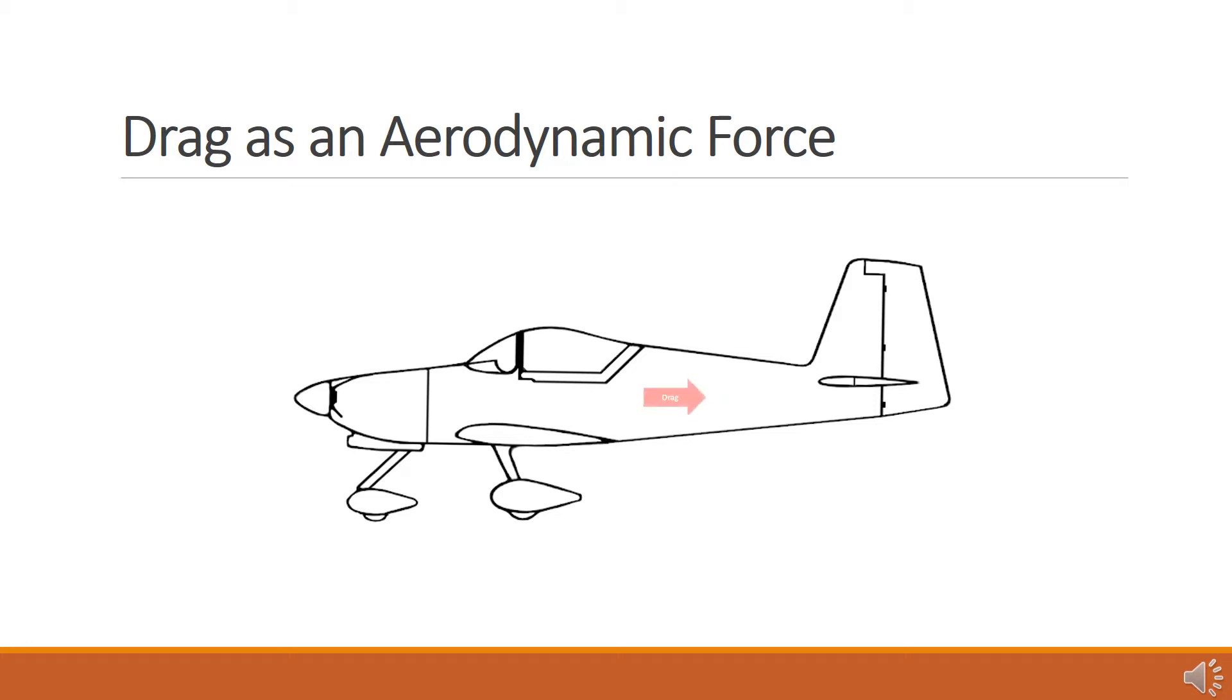Drag is the aerodynamic force that opposes an aircraft's motion through the air. Drag behaves and impacts an aircraft as a mechanical force causing the aircraft to slow down. As a force, it can be represented by a mathematical vector that includes both magnitude and direction. The direction of that vector would be opposite to the vector that represents the motion of the aircraft caused by thrust. Drag is generated by every part of an aircraft, even the engines.